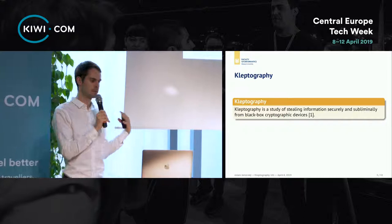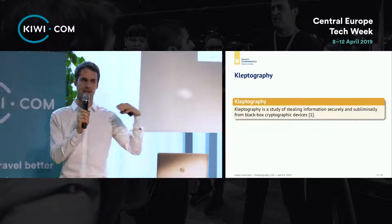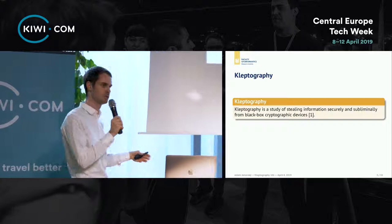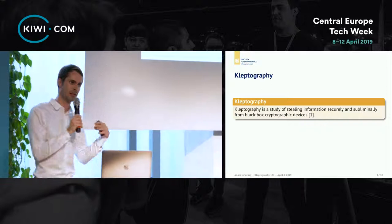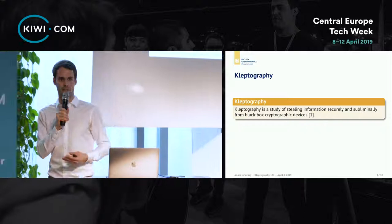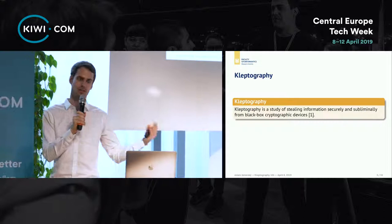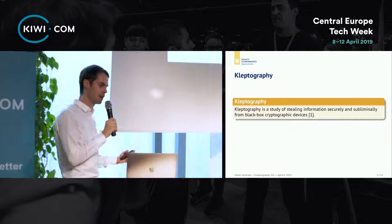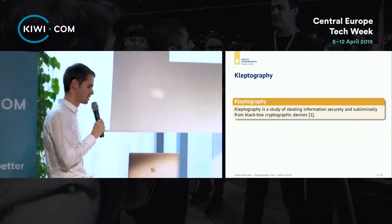A black-box cryptographic device is, put simply, a device whose internals you cannot easily scrutinize. For instance, if you have a Java card encased in an epoxy shell, you can't really see what's inside. The algorithms appear to be working as expected but may actually be doing something else. A binary library can also be viewed as a black-box device because you have to reverse-engineer it to see what's going on inside.